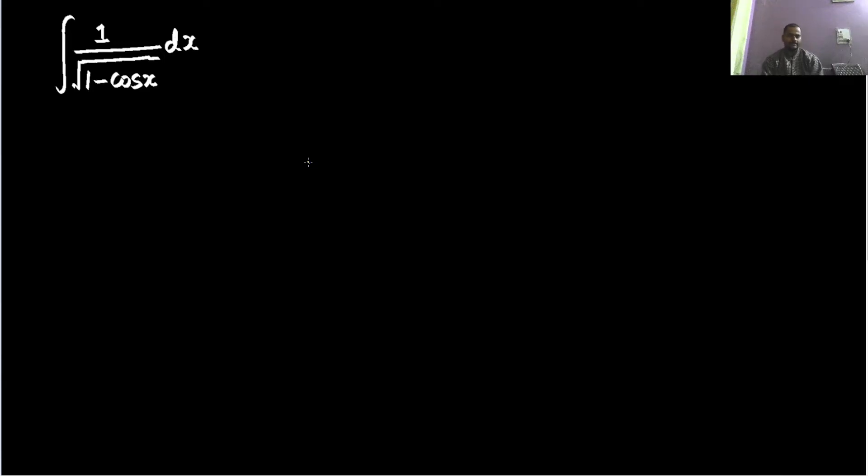With the help of trigonometry, we can reduce this thing because we know that 1 minus cos 2x is 2 sine square x. So in the similar fashion, 1 minus cos x will become 2 sine square x by 2.